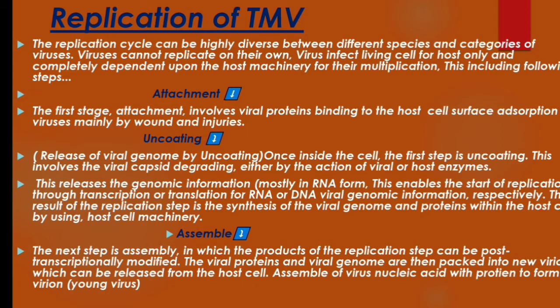The next step is assembly. The type of replication is such that the products of the replication step can be post-transcriptionally modified. Viral proteins and the viral genome are then packed into new virus particles — assembled into new viruses. We call the newly assembled virus a virion, formed by assembly of viral protein and RNA.